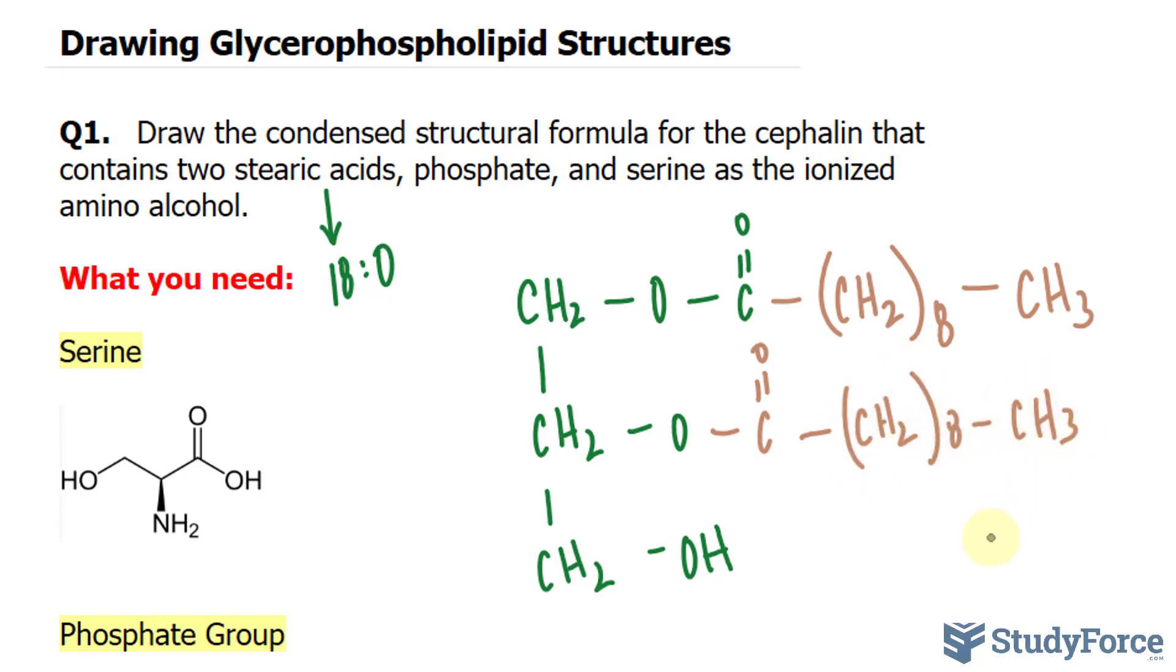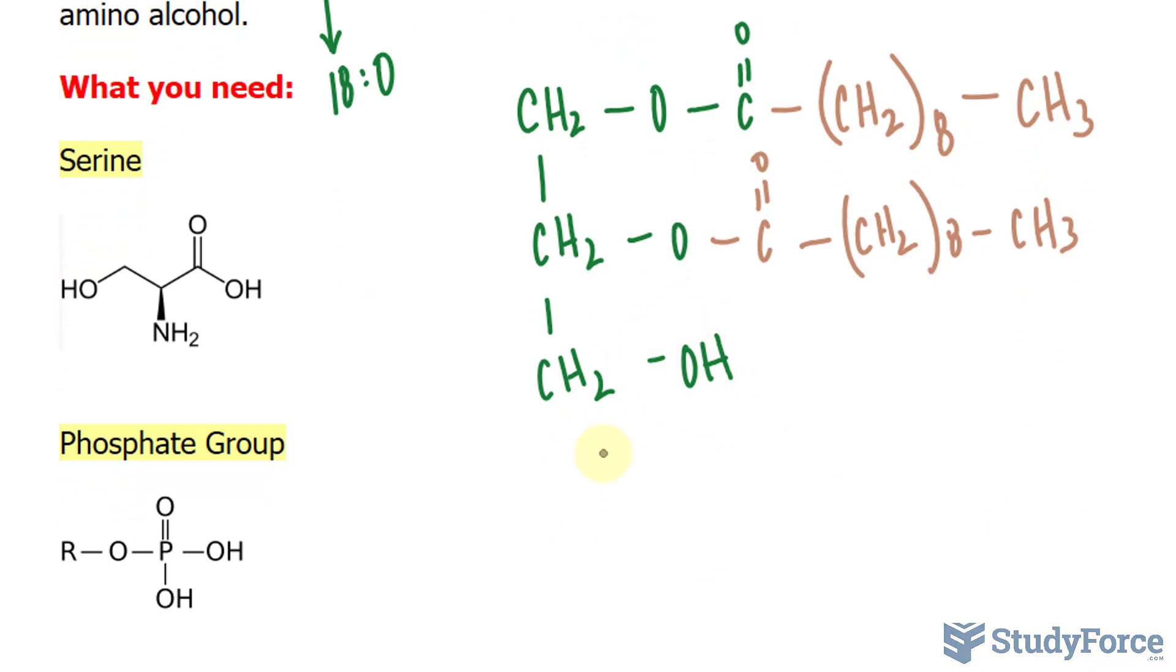And now the tricky part is phosphate and serine. They also form an ester bond. Focusing on this, the reaction between this hydroxyl and this part of the phosphate will produce a water molecule. They don't want us to show that, but just letting you know. So I'll erase this hydrogen and write down phosphate, double bonded to oxygen, OH, and then this oxygen will form a bond with this carbon.